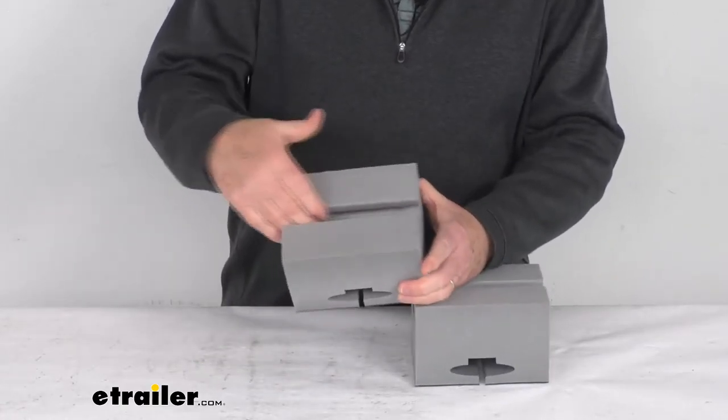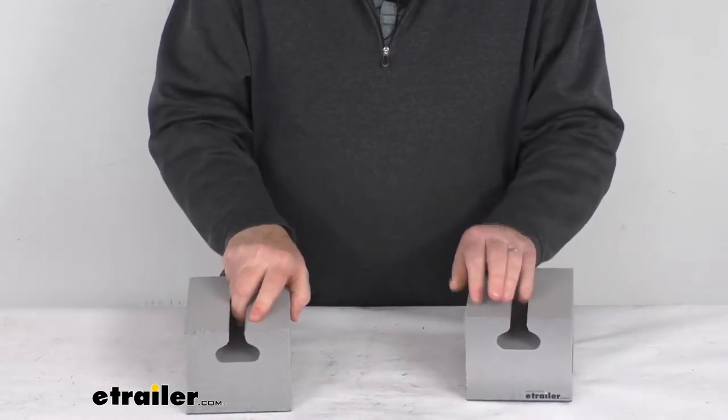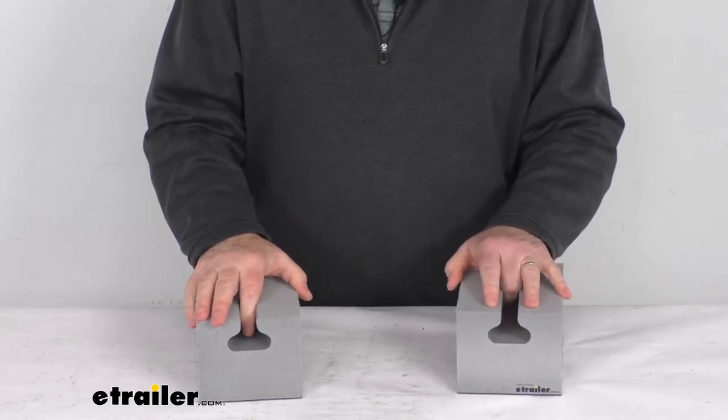Without crossbars, what you'll do is just attach right in here the edge of the canoe and then lay it down onto your naked roof and secure it with tie-down straps. Now the tie-down straps are not included, we do sell them separately.